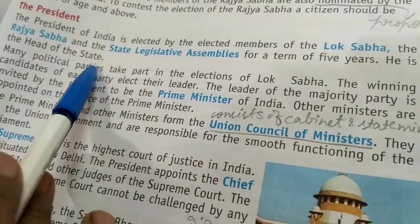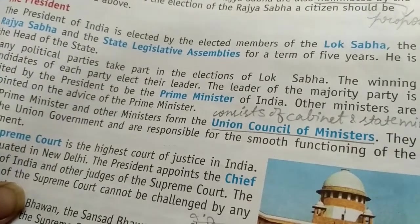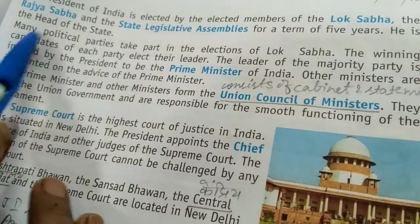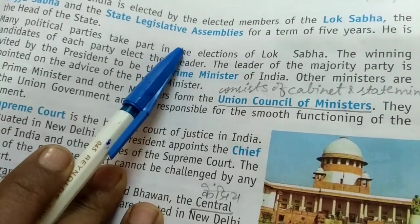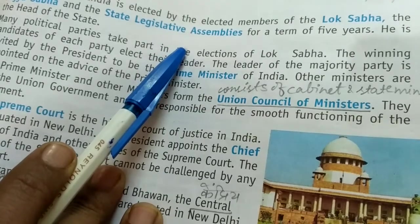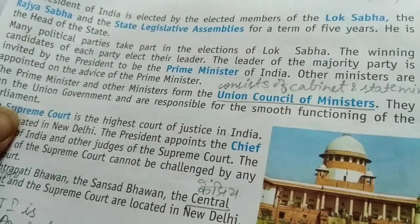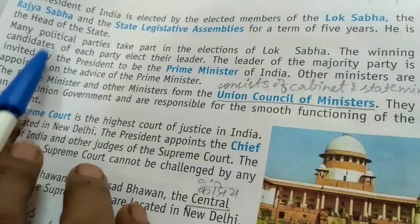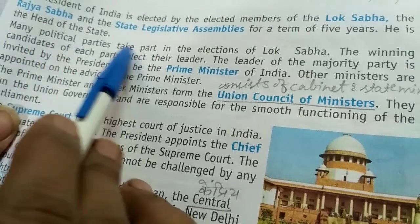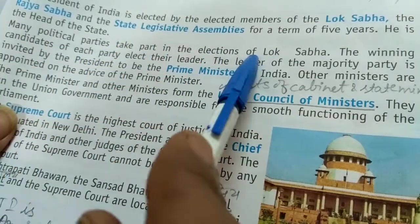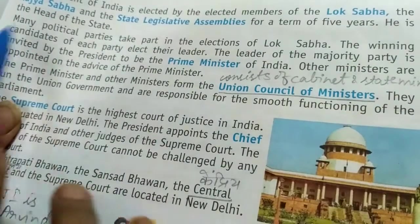The President is the head of the state — head of the whole country and all the states within it. Many political parties take part in the elections of Lok Sabha, such as BJP (Bharatiya Janata Party) and Congress, among many others. You can find names of political parties from newspapers or the internet — that is a task for the students. The winning candidates of each party elect their leader.